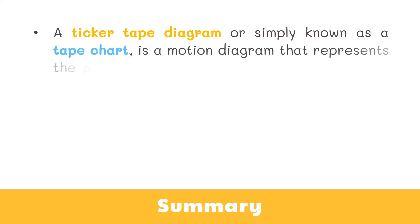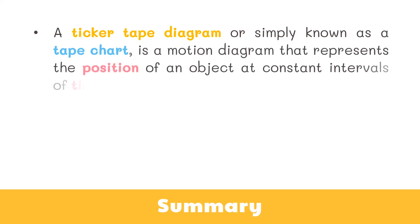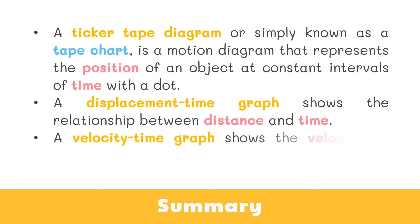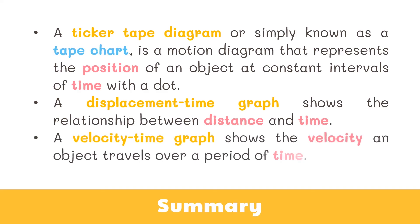Here's a quick recap. A ticker tape diagram, or simply known as a tape chart, is a motion diagram that represents the position of an object at constant intervals of time with a dot. A displacement-time graph shows the relationship between distance and time. A velocity-time graph shows the velocity an object travels over a period of time.